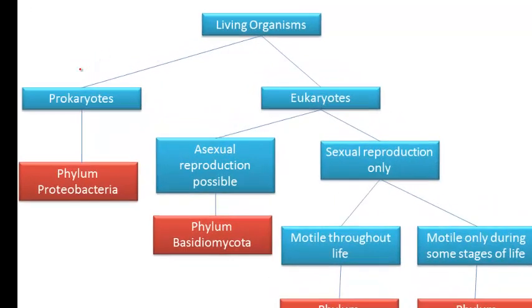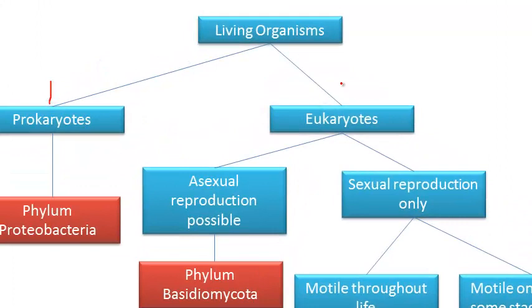In this flow map, my prokaryote and eukaryote statements are number 1. The prokaryote choice becomes 1A, and the eukaryote choice becomes 1B. I will continue numbering my flow map until all of my choices have a number and a corresponding letter.